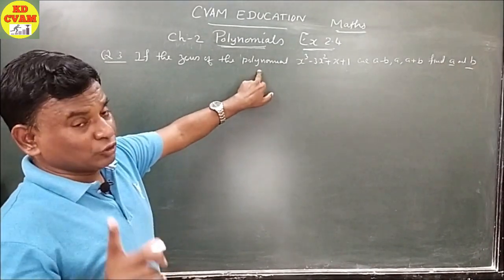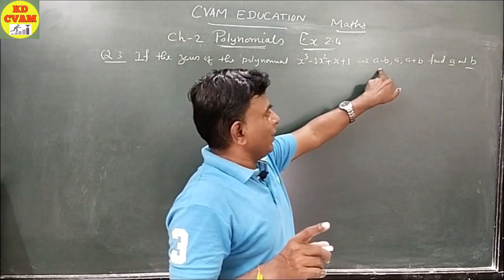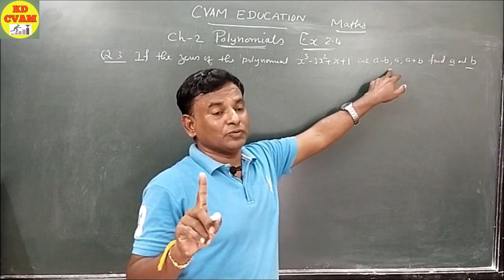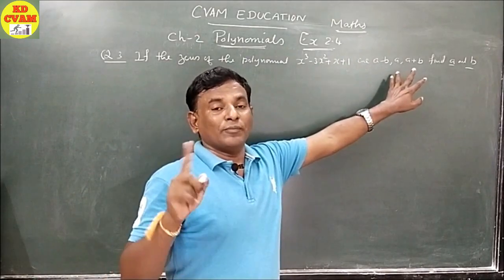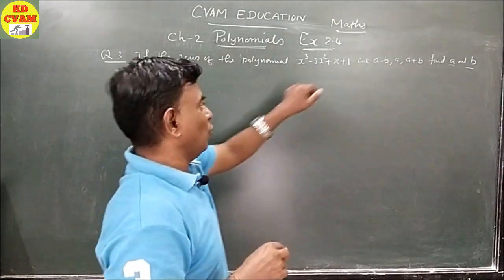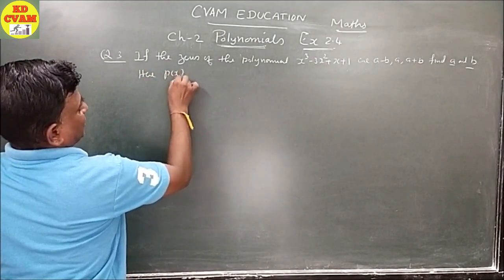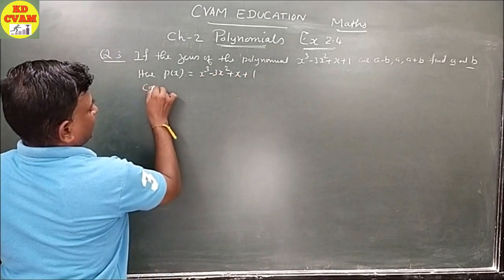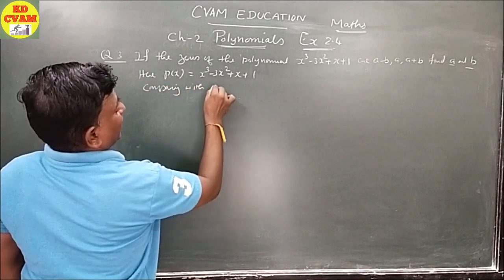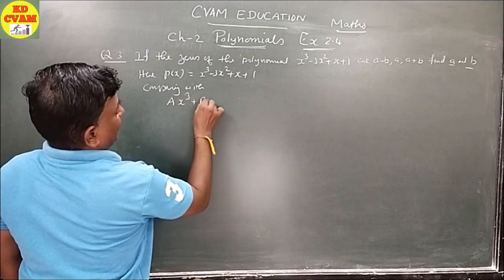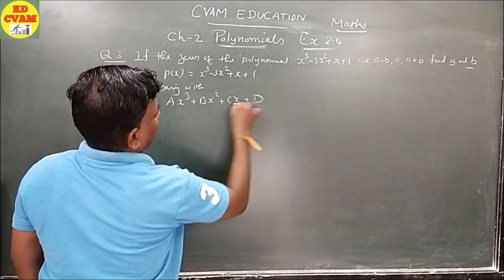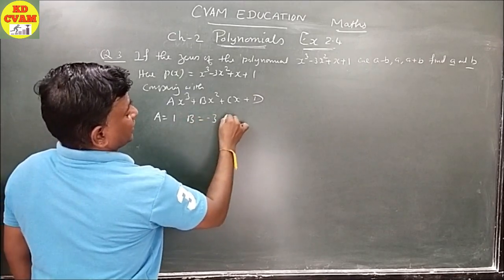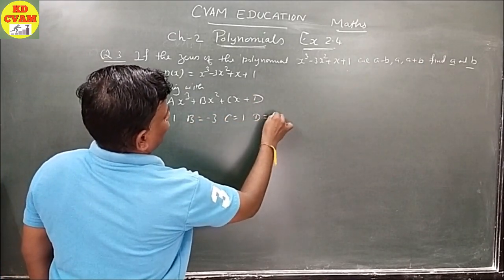Question number 3: if the zeros of the polynomial P(X) = x³ - 3x² + x + 1 are a - b, a, a + b, find a and b. Note that small letters are already used here, so we must compare with capital letter standard form Ax³ + Bx² + Cx + D. We get A = 1, B = -3, C = 1, D = 1.